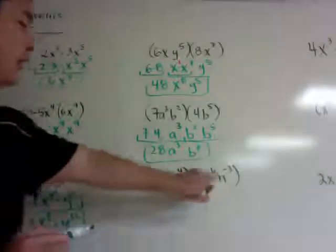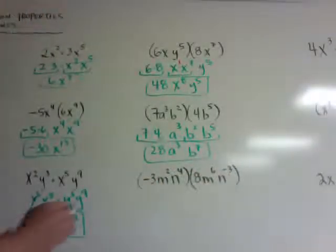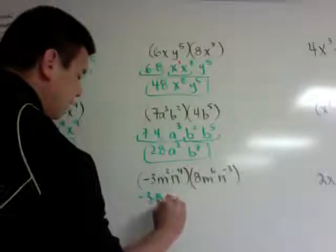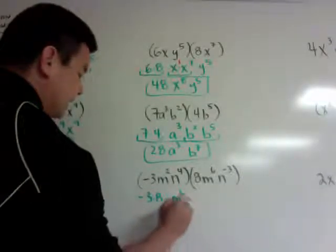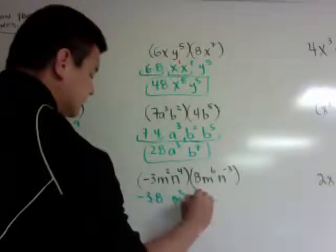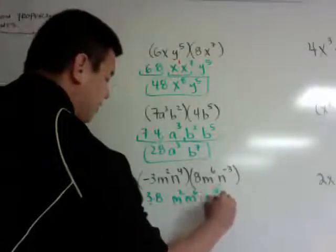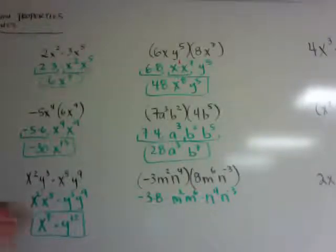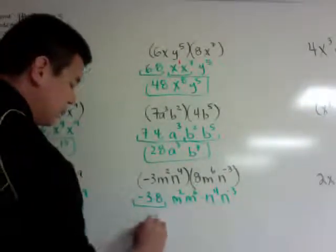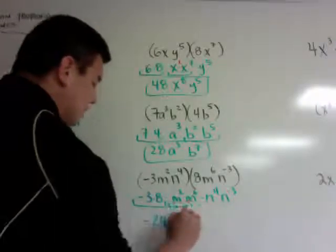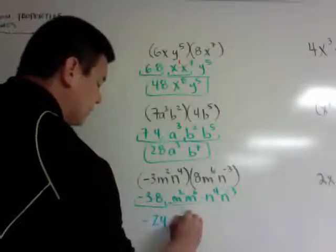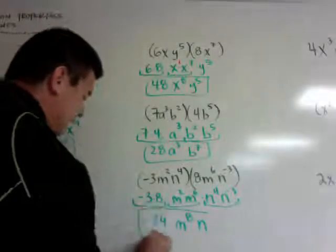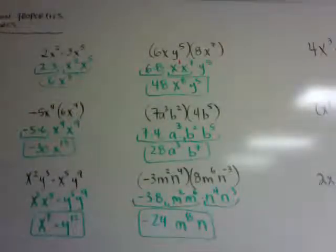Here's one with a negative coefficient: negative 3m²n⁴ times 8m⁶n⁻³. I rewrite it as negative 3 times 8, then m squared times m to the sixth, then n to the fourth times n to the negative 3. This becomes negative 24, m to the eighth power, and n to the first power — which is just n. Drop off the exponent of 1.